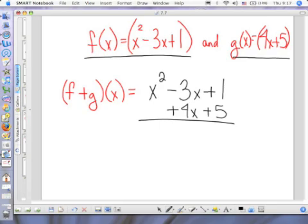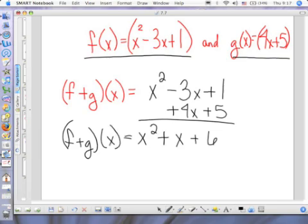And all we have to do is put it all together. We have X squared here. We have negative 3X plus 4X, which gives us positive 1X, and we have 1 plus 5, which gives us 6. If you wanted to write the whole thing out, you would say F plus G of X equals that.